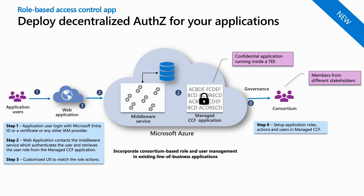The supply chain application in this demo is used to manage the lifecycle of coffee beans from the farm to the hands of consumers. It has four personas: the farmer, distributor, retailer, and consumer. Each persona is assigned one or more roles that determine the set of actions they can perform. Enterprise applications use integrated authentication and authorization provided by an identity provider like Microsoft Entra ID. Upon login, the identity provider issues JWT tokens, which contain user information and claims that determine the actions they can perform.